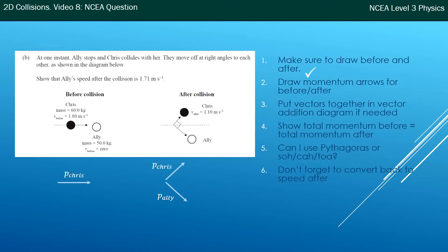Here are our momentum arrows. Chris has momentum going to the right, and Ellie and Chris's momenta are going in their respective directions after. We don't know the values yet because we've been given speeds, not momenta. Next we put them together in a vector addition diagram. Chris is going up to the top right and Ellie's going to the top left — added head to tail. From the start of those arrows, the total momentum goes along to the end of Ellie's arrow, unchanged before and afterwards.